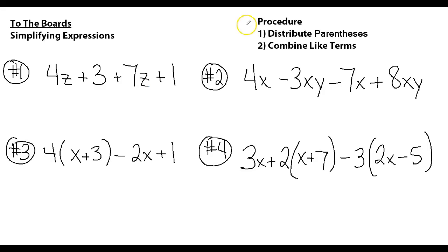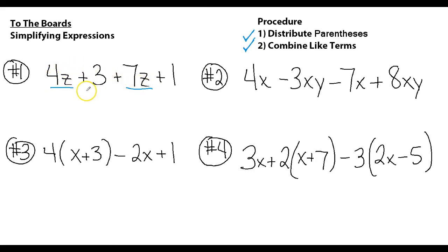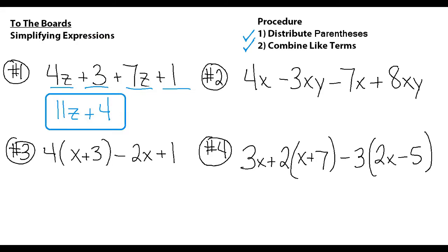Let's see how you did. Question one has no parentheses, so no distributing needed. Step two: combine like terms. 4z + 7z = 11z. Then combine the numbers: 3 + 1 = 4. That's our answer for number one: 11z + 4.